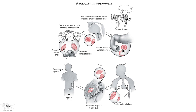The acellular protective coating on the metacercariae is digested away, releasing the immature larva, which develops to an adult rather quickly as it penetrates the wall of the small intestine, migrates through the diaphragmatic tissue, and enters the pleural cavity — much the same way as Fasciola exited the small intestine to migrate in the peritoneal cavity until it found the liver.